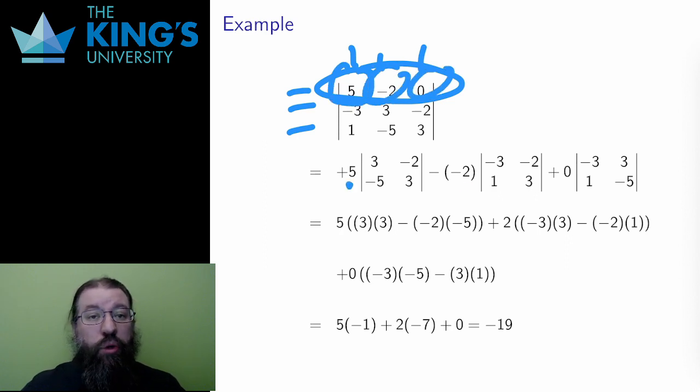Then I apply the checkerboard of signs from the previous slide. So that's positive for 5, negative for negative 2, and positive for 0.